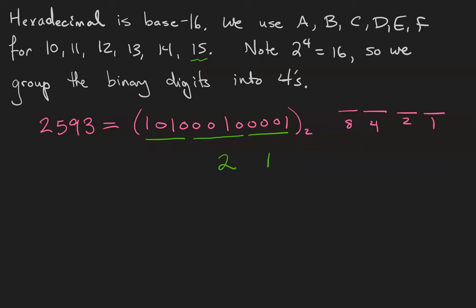Now it wouldn't do to write 10 by itself because that might be seen as 1 0, so we're going to write an A. So the hexadecimal representation for this number is A21.